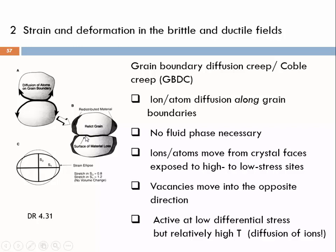What is important is that for this kind of diffusion along grain boundaries of pre-existing grains, we do not need any fluid phase. This can happen in the dry field and ions might move from one side to the other without being dissolved in a fluid phase. We come back to this point a little bit later.